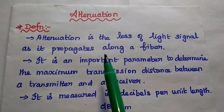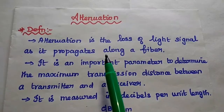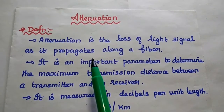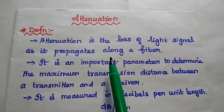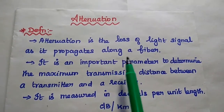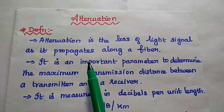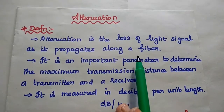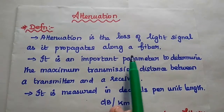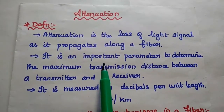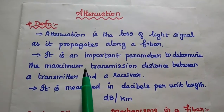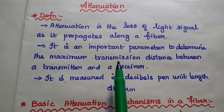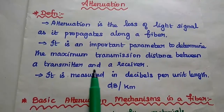Now we are going to discuss attenuation in optical communication. In general, attenuation represents the loss of signal strength when it is propagating over a communication channel. In optical communication, attenuation represents the loss of light signal as it propagates along a fiber cable. Since it represents the loss, it is an important parameter to determine the maximum transmission distance between the transmitter and the receiver.